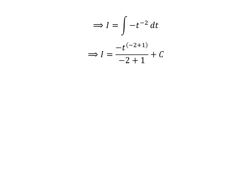Applying the power rule, we get I equals t raised to the power of minus 2 plus 1 upon minus 2 plus 1, which is t to the power of minus 1 upon minus 1, plus capital C. Capital C is the arbitrary constant of indefinite integral. Never forget to add this constant.